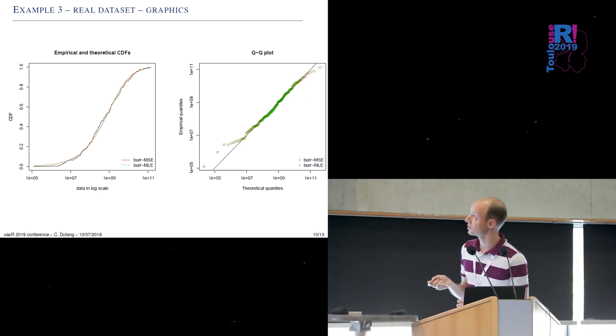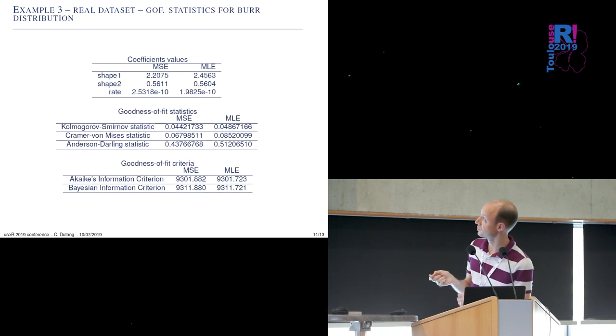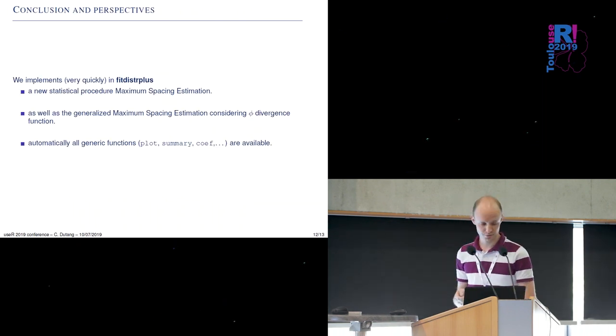And so we apply just a single distribution the Burr distribution which is quite a quite good fit between maximum spacing estimation and the maximum likelihood so they are almost the same but still they are very good the shape of the distribution. And if we compare in terms of the goodness of fit statistic and not just from a graphical point of view we see that maximum spacing is a little bit better especially for the first type of statistic yet the differences are very low between the maximum likelihood.